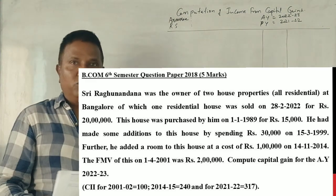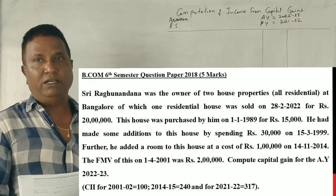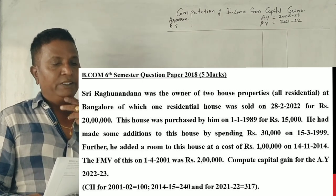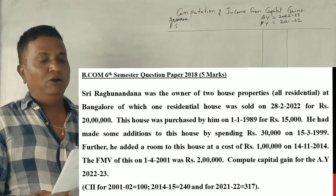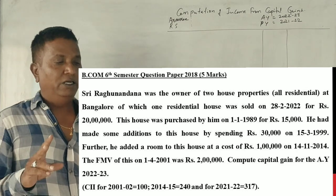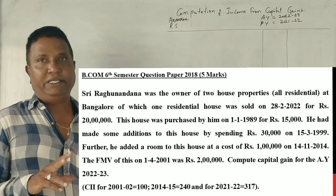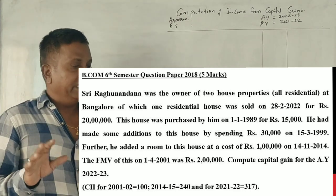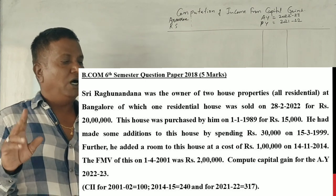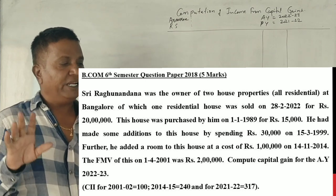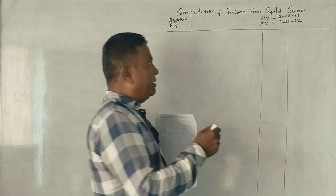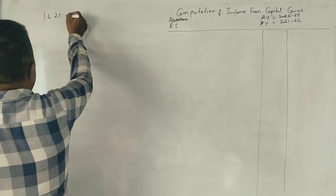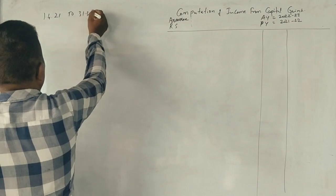2018, page number 11, question number one. Sri Ragunandan was the owner of two residential house properties. One residential house was sold on 28th of February 2022, in the previous year.